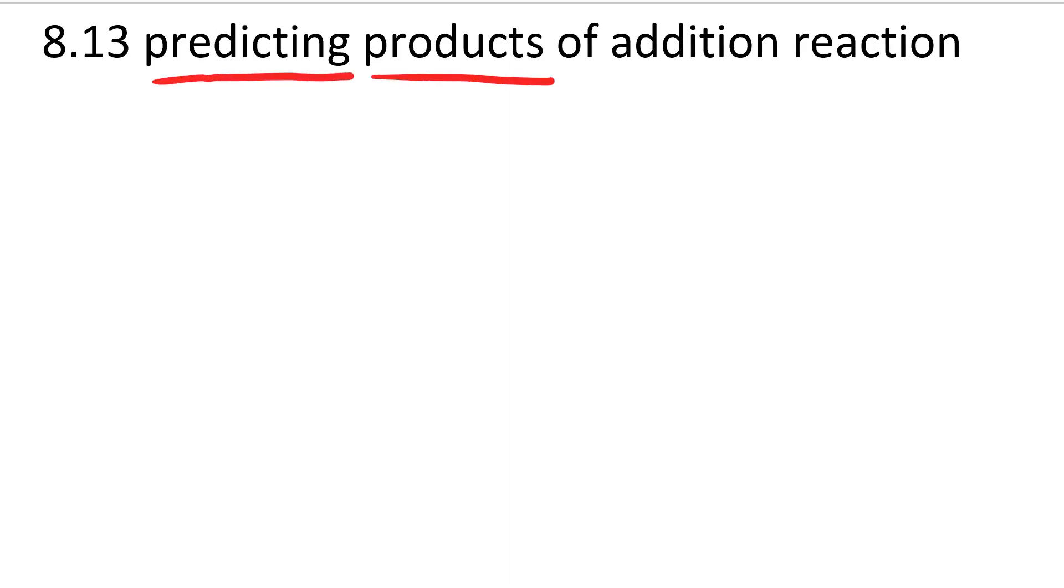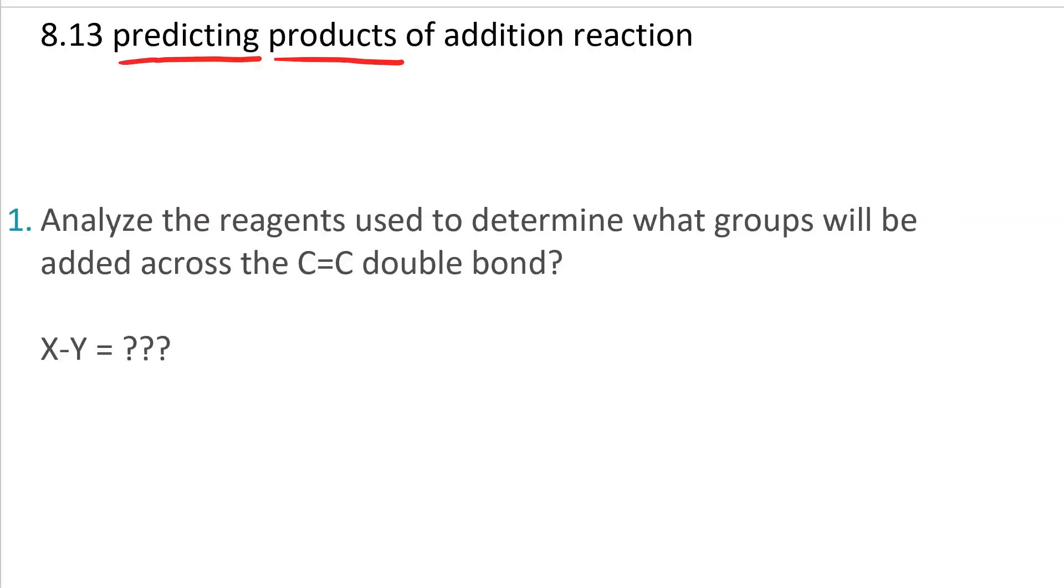Predicting the products of an addition reaction. The first thing you want to do is analyze the reagents. What type of reaction is going to happen? Each type has its own characteristics. There are 10 different ones that we studied in this chapter.